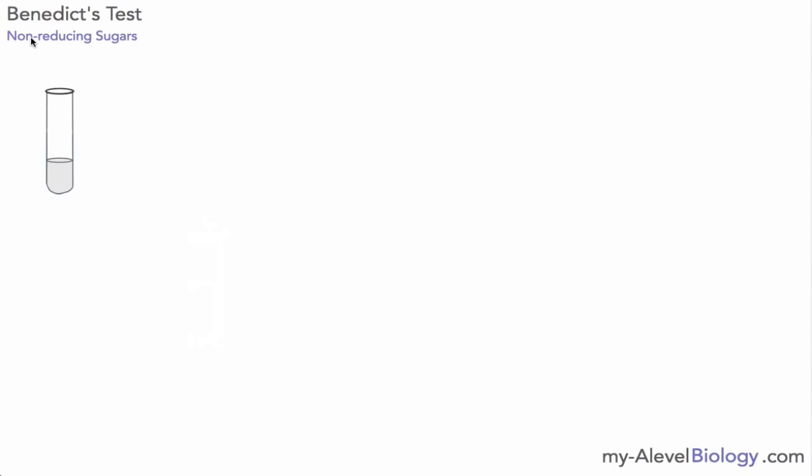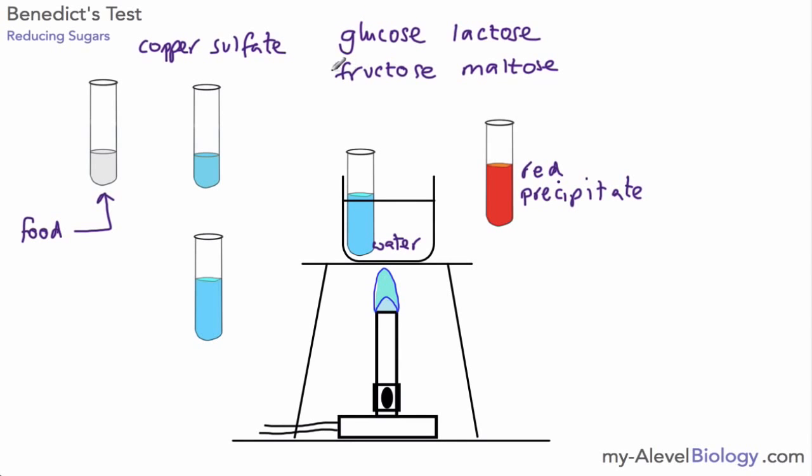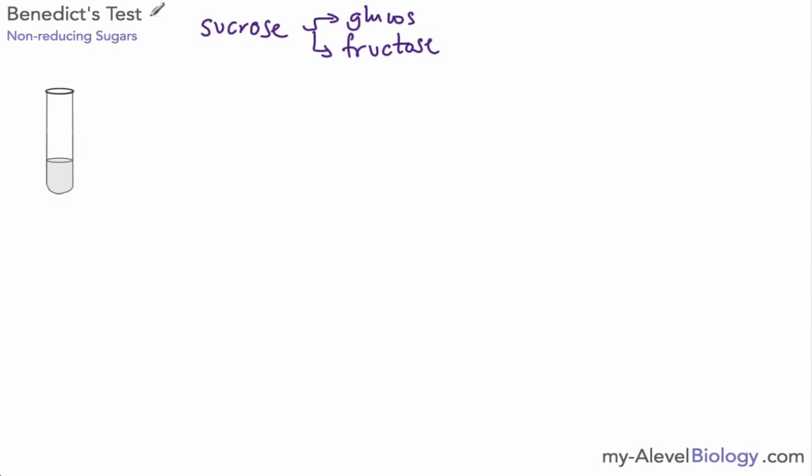So we can use Benedict's test for a non-reducing sugar, but we need to add an extra step. Now an example of a non-reducing sugar is sucrose. Sucrose is a disaccharide that's made of glucose and fructose, and as you can see from our examples previously, both glucose and fructose are reducing sugars. But how do we get the sucrose broken down into glucose and fructose?